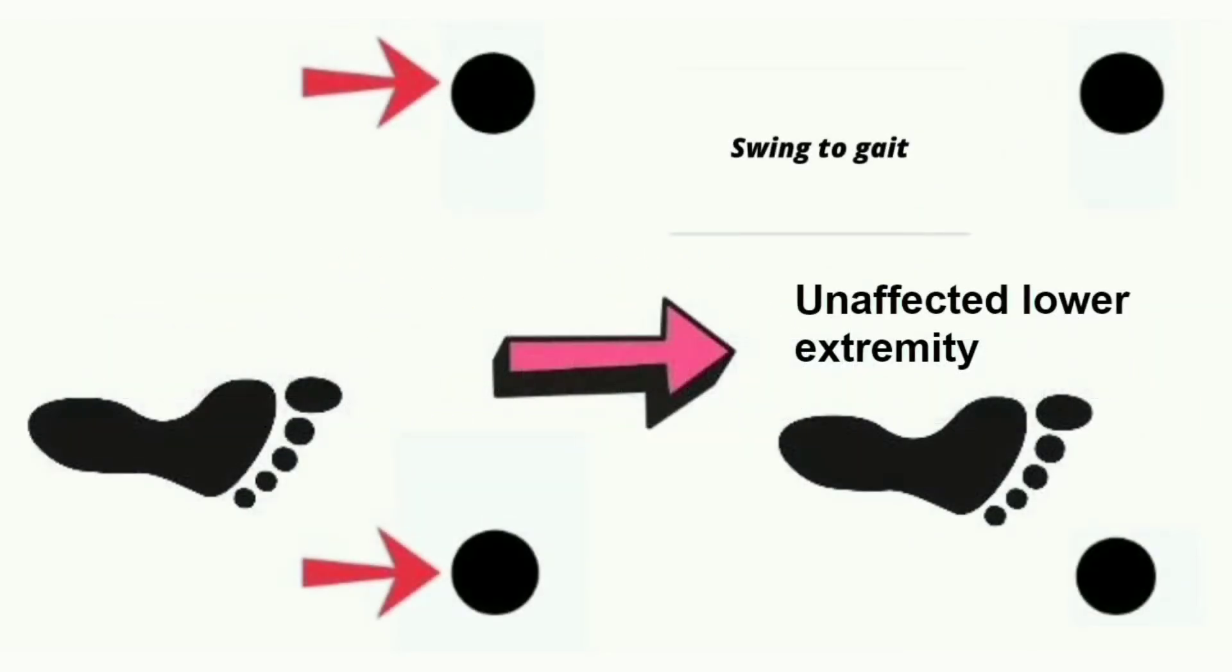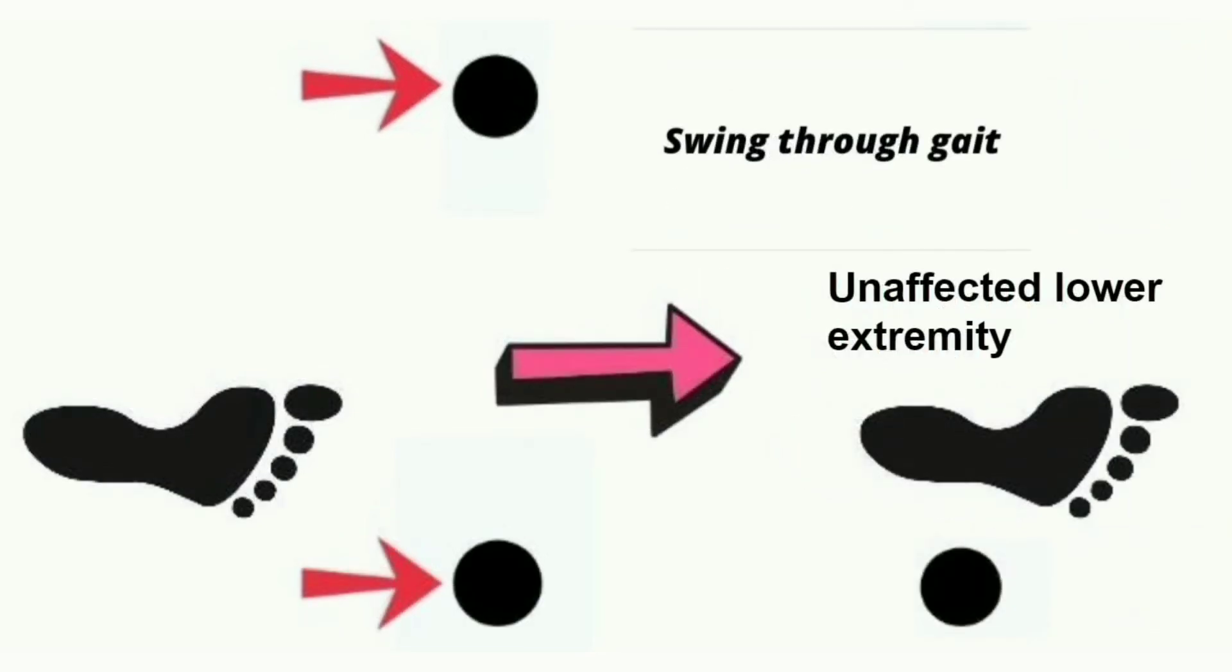When the unaffected lower limb swings to the crutches, that is swing to gait. When the unaffected lower limb swings beyond the crutches, that is swing through gait.